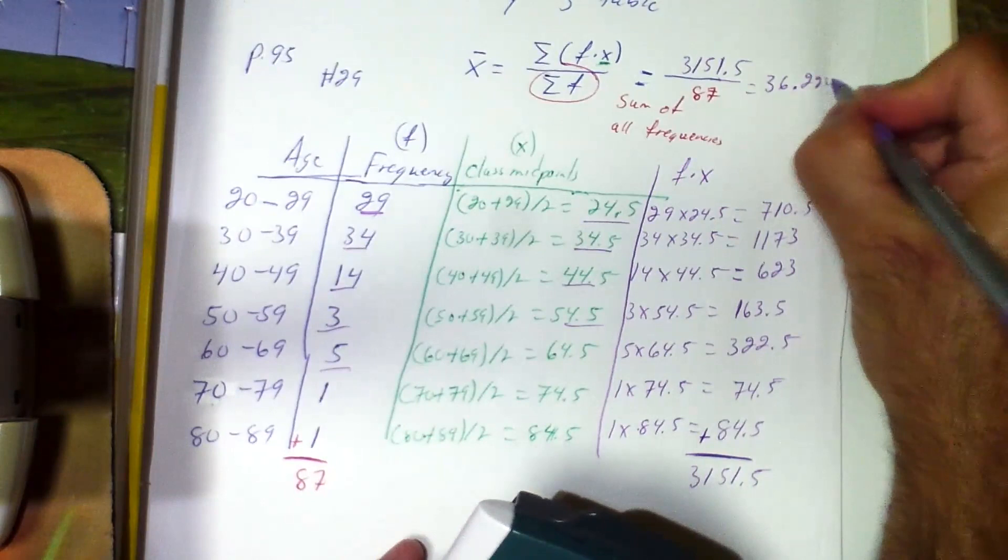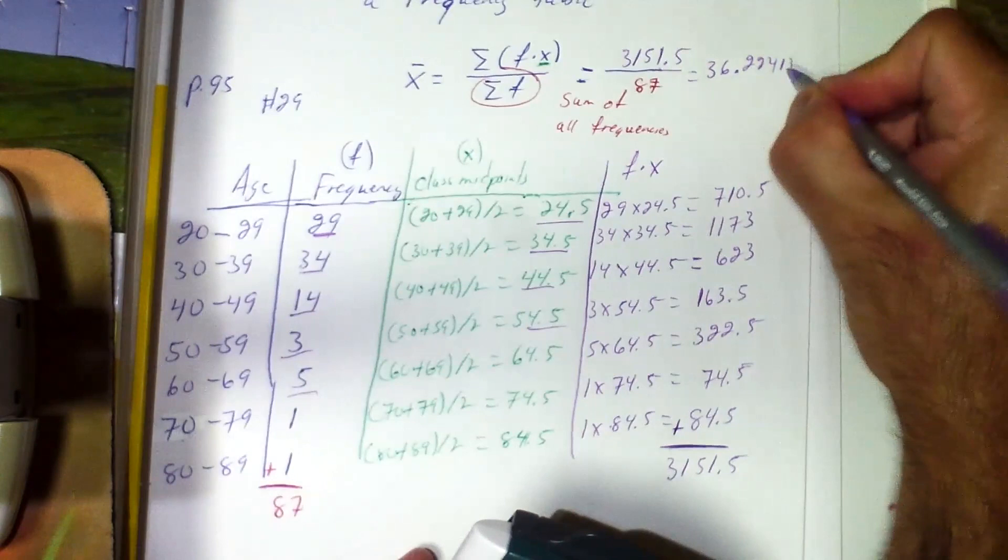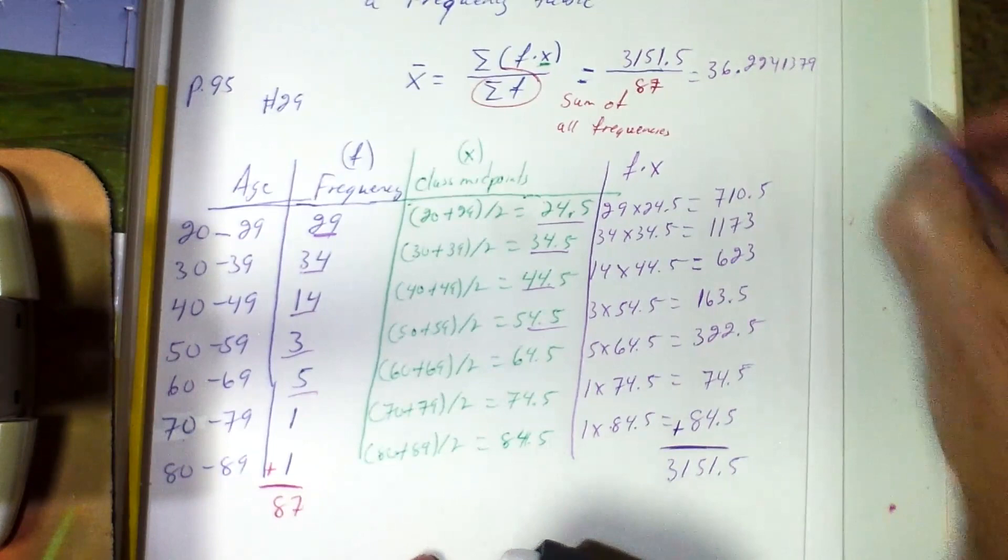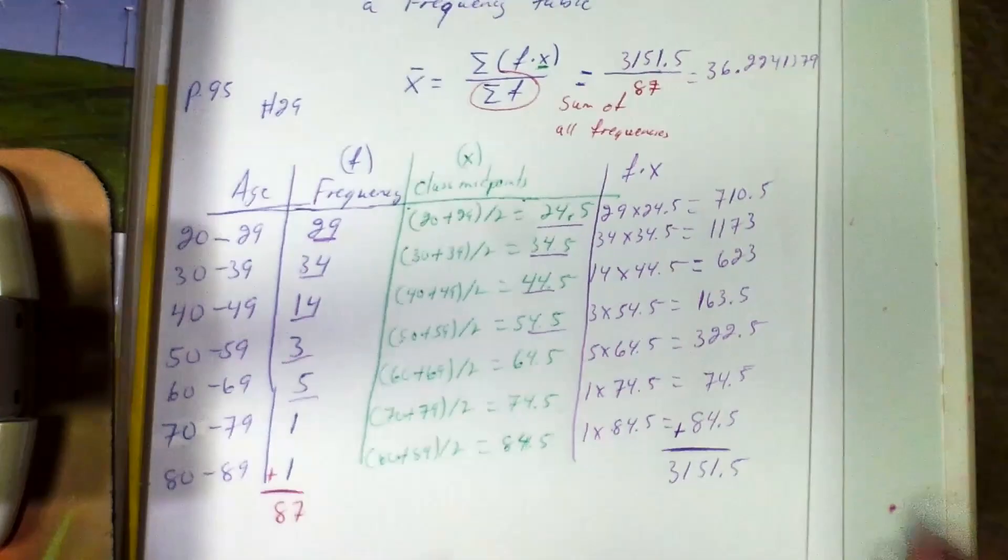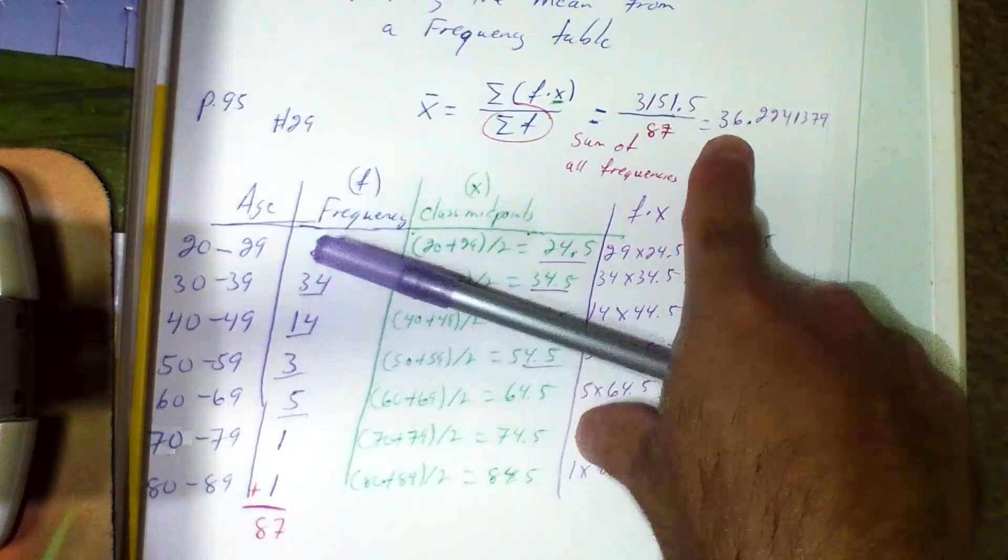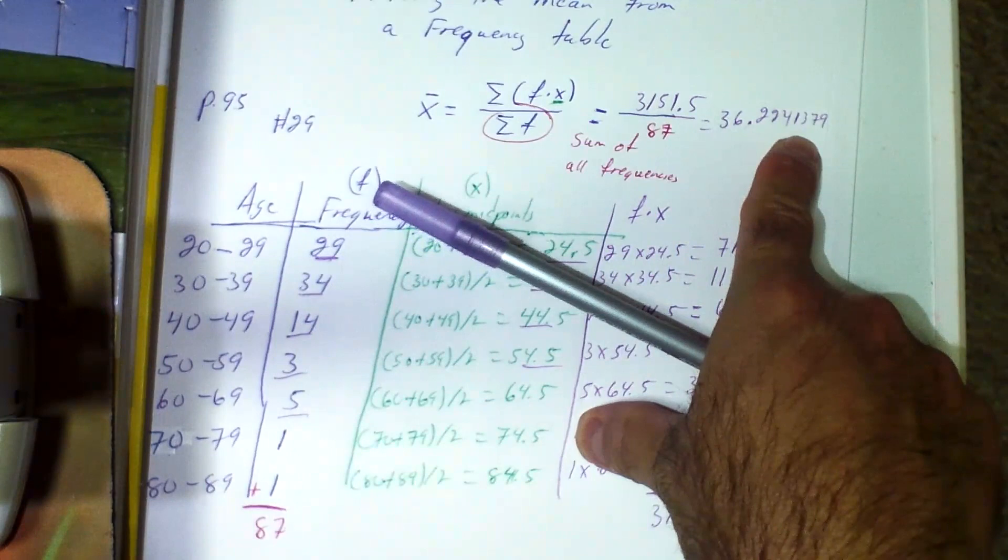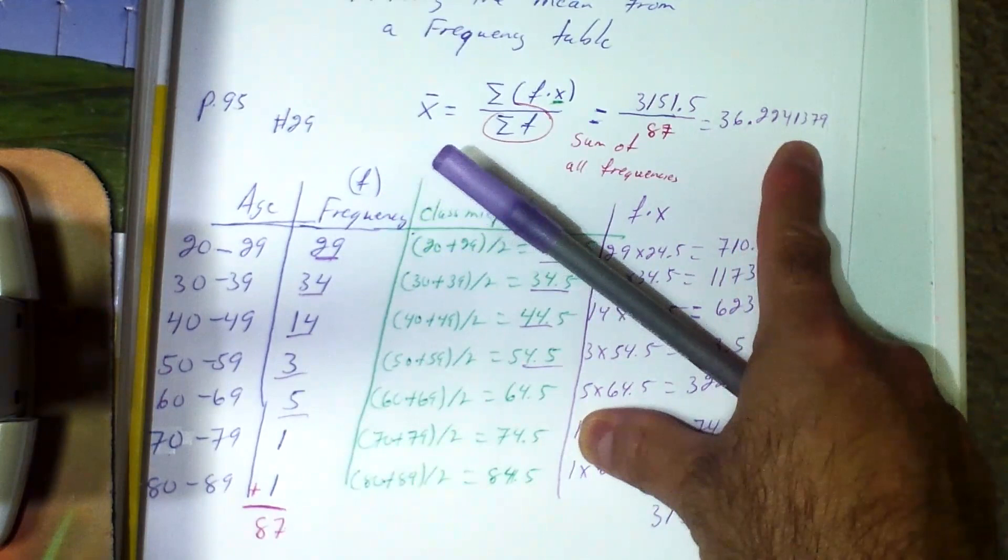I get 36.224... and it keeps going. I'm running out of space, but that's the whole actual approximate answer. But I've got to round it.